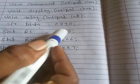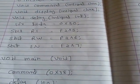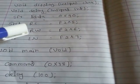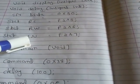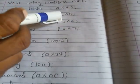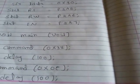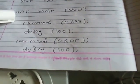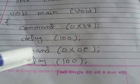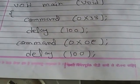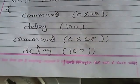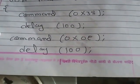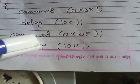The data port of the LCD is connected to Port 1 of the microcontroller (0x90). The Register Select, Read/Write, and Enable pins are connected to Port 2.5, 2.6, and 2.7 of the microcontroller. Then we switch to the main function — void main. The overall main program is written here. First, we give the command 0x38, which is used to initialize the LCD, followed by a delay.